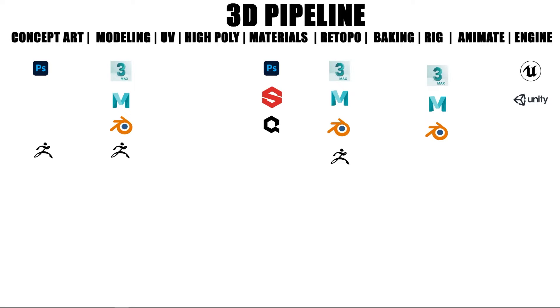Retopology and baking are the next stage. That's basically taking the high poly and bringing it down to a workable low poly so you can put it in the game engine. From there you're going to rig it, and that is the skeletal structure that you're going to use.